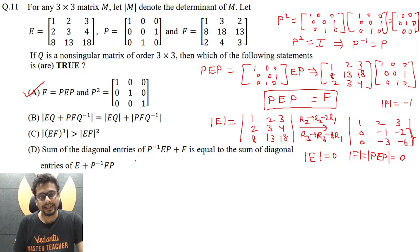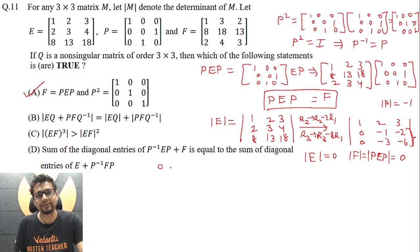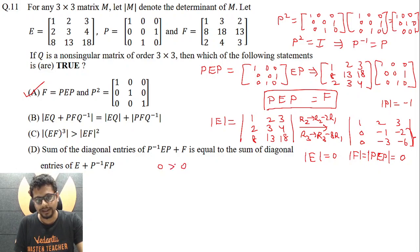Let's explore options B and C. If you see option C first, clearly the left-hand side is 0 because det(E) and det(F) are both 0. The right-hand side is also 0, but 0 greater than 0 is false. So option C is not correct.